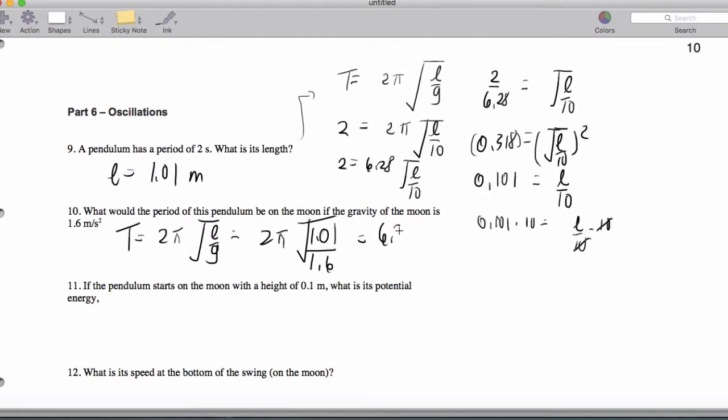So this is going to be 6.28. Let's take 1.01 and divide it by 1.6. And we take the square root of that and we end up getting 0.79 here. And when we figure that out, our period ends up being 4.99 seconds.